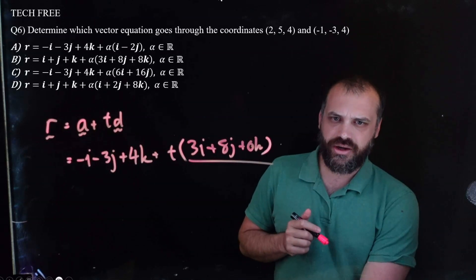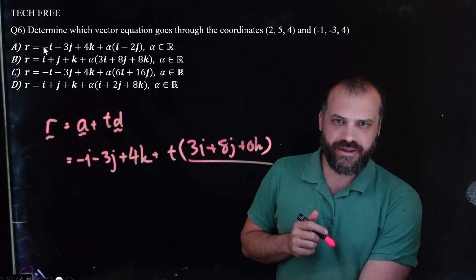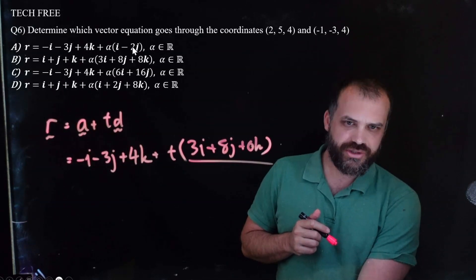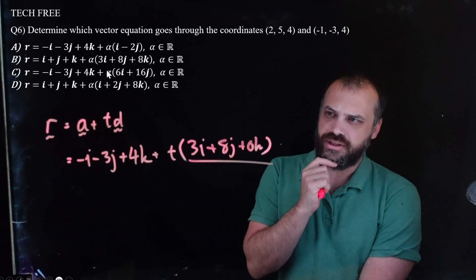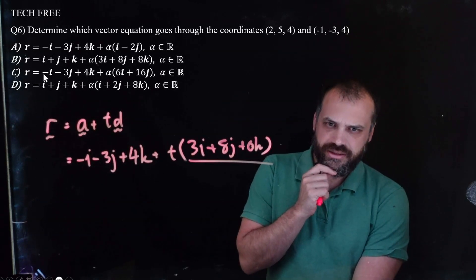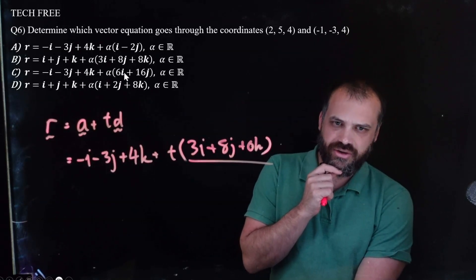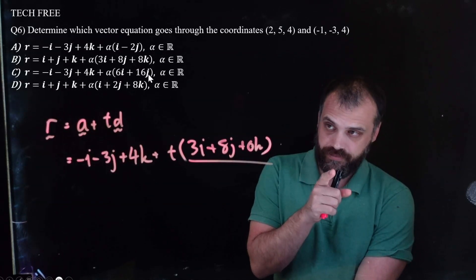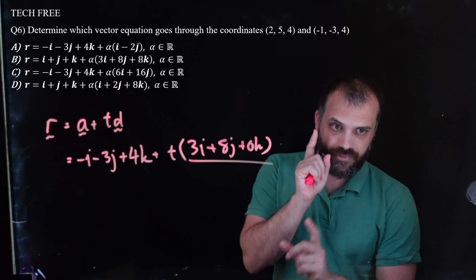Alright, so I have an answer here of negative I minus 3J plus 4K. And then I have like a 3I plus 8J plus 0K. Hmm. Okay. So I had a, I thought maybe A, and that's just got negative I minus 2J. No, K. That's interesting. What about C? That's got 6I plus 6J plus 16J. Hmm. Okay.